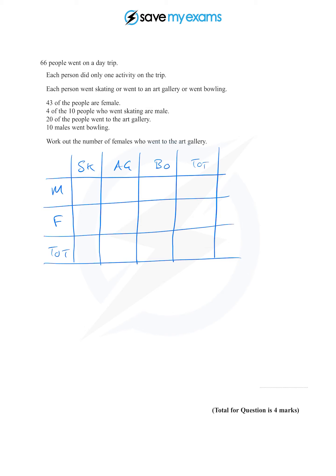We're going for the number of females who went to the art gallery, but before we do that let's put the information we're given in. The first piece of information is that 66 people went on a day trip, so the total of all the totals is 66. And then we're told that 43 people are female, so the female row ends in 43.